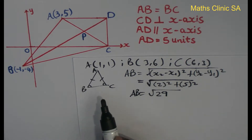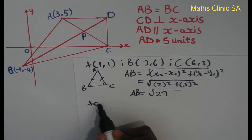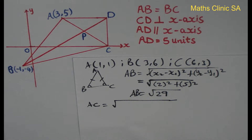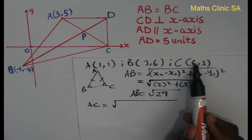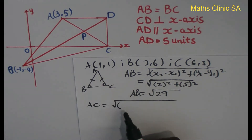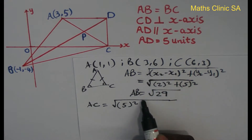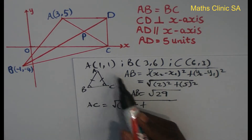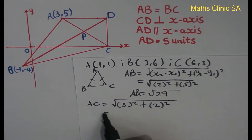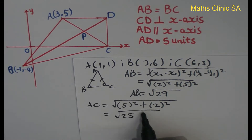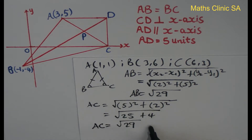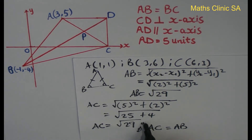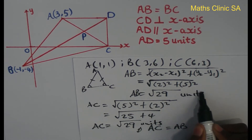Now I must check the length of AC using the same distance formula. For AC, X2 minus X1 is 6 minus 1, so that's 5 squared, plus Y2 minus Y1 is 3 minus 1, so that's 2 squared. 5 squared is 25, 2 squared is 4, giving the square root of 29. So AC equals AB.